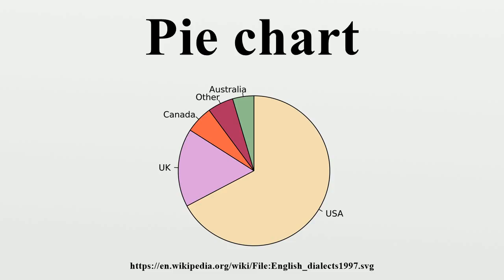The earliest known pie chart is generally credited to William Playfair's statistical breviary of 1801, in which two such graphs are used. Playfair presented an illustration which contained a series of pie charts, one of those charts depicting the proportions of the Turkish Empire located in Asia, Europe, and Africa before 1789. This invention was not widely used at first. The French engineer Charles-Joseph Minard was one of the first to use pie charts in 1858, in particular in maps. Minard's 1858 map used pie charts to represent the cattle sent from all around France for consumption in Paris.